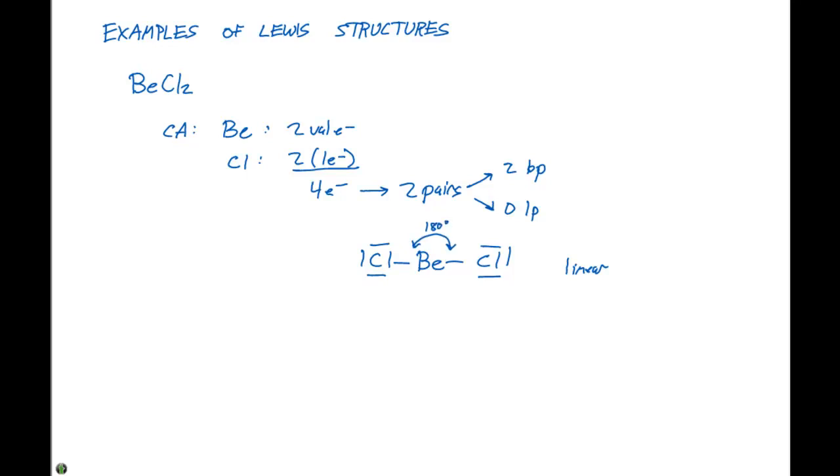For linear molecules, Lewis structures serve a fairly decent purpose for us. But the question is, what happens when we go to another example, like ammonia?